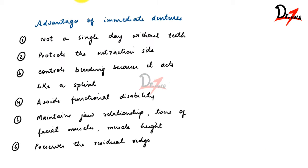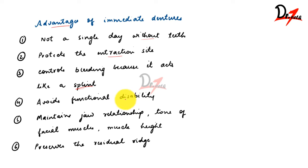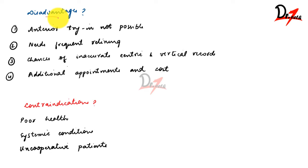Advantages of immediate dentures: the patient is not a single day without teeth; it protects the extraction site and acts like a splint; it controls bleeding; it avoids functional disability; it maintains jaw relationship, facial muscle tone, and muscle height — we can spare premolars to maintain vertical dimension; and it preserves the residual ridge, since the ridge is in function from day one, experiencing loads and stresses, so bone resorption is lesser.